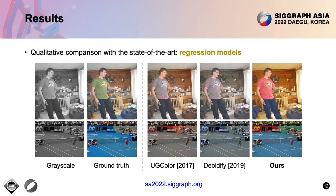Here are two examples comparing with state-of-the-art regression-based methods. As explained earlier, regression models suffer from color multimodality and tend to generate desaturated colors. In contrast, our method achieves both colorful and spatially consistent results, attributed to the disentangled model. Probabilistic model-based methods have no desaturation problem; however, spatial inconsistency is commonly induced because of ignored or weak spatial constraints.